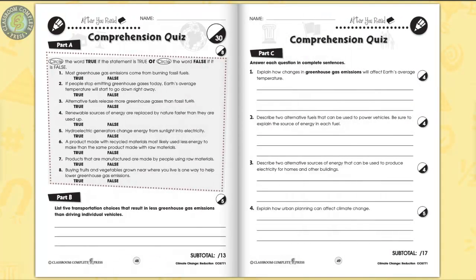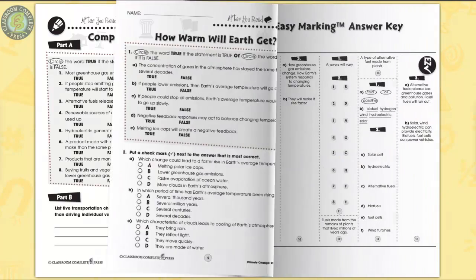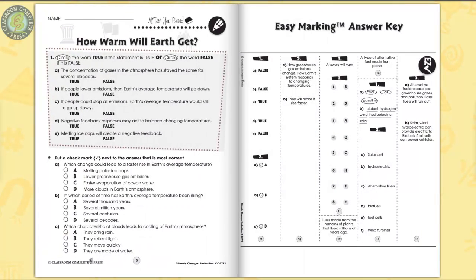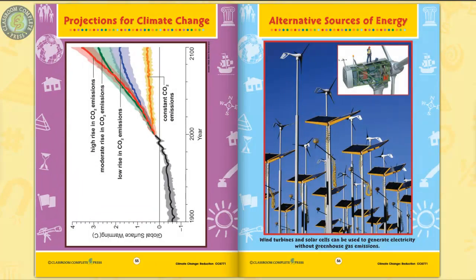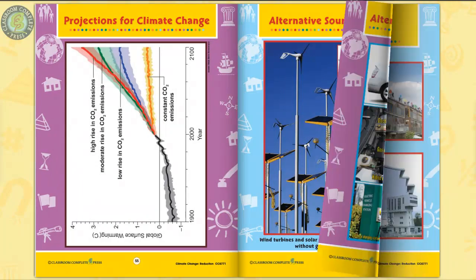Then, a three-part comprehension quiz. The easy marking answer key works by lining up perfectly with the matching question pages. Six color mini posters completes the resource.